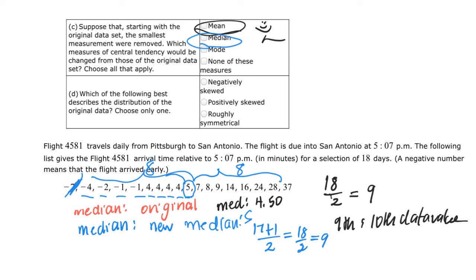For C, you have to check it. Depending on the data set, the median could be left blank or it could be checked. So you have to find the median in both cases. So you have to know how to do it for even data sets and odd data sets. All right. So let's move on to D.